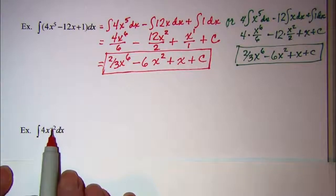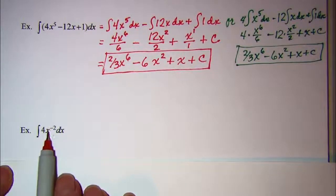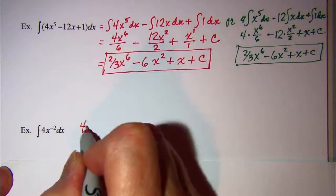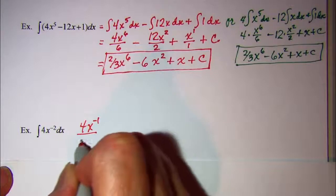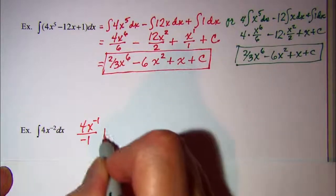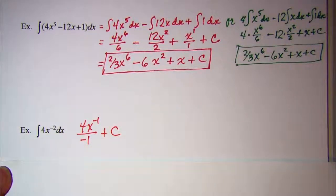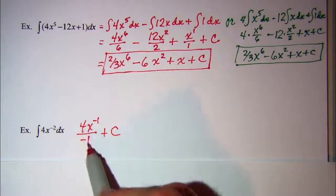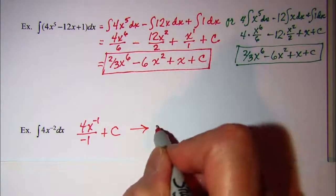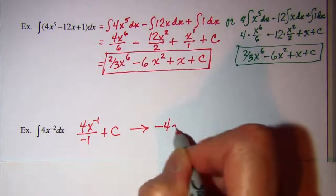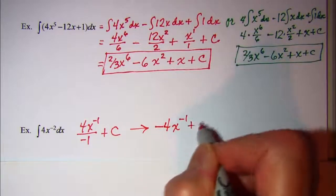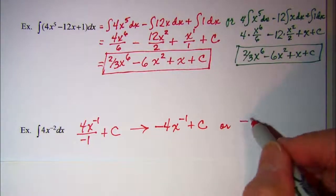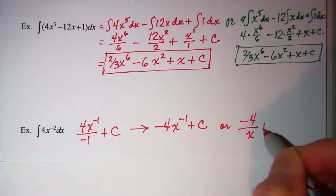For another example: if we increase our exponent by 1 we get x to the negative 1, so this becomes 4x to the negative 1 divided by that new exponent plus C. Simplifying, we get negative 4x to the negative 1 plus C, or equivalently negative 4 over x plus C.